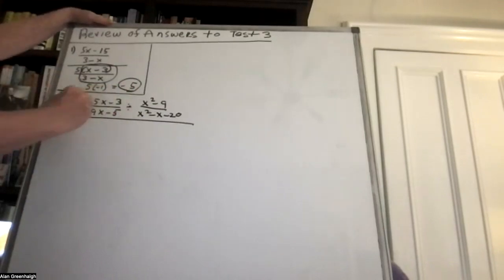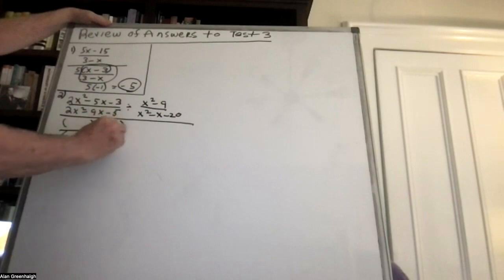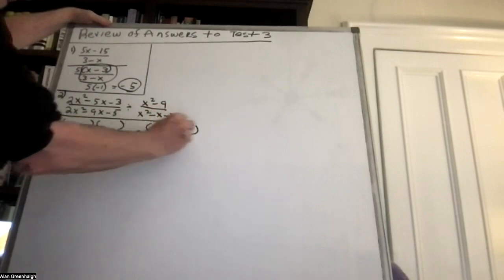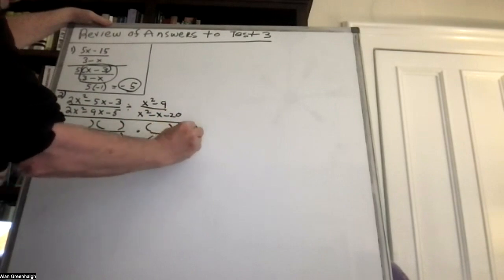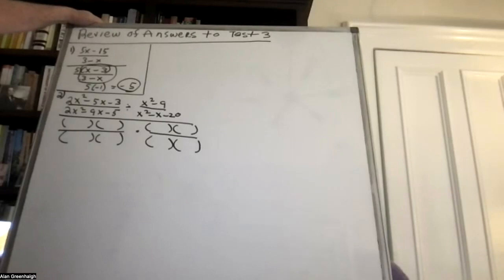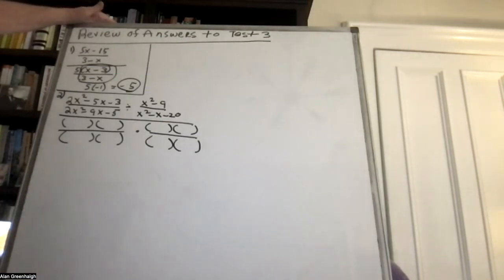Let me start factoring as I go along. This is basically what you had to do — factor everything. This was not only a problem where you have to divide two fractions, but it was a test of your ability to factor. That's obviously what's going on in this problem.